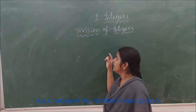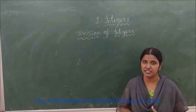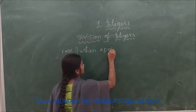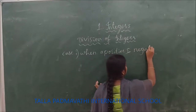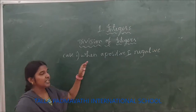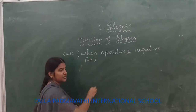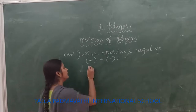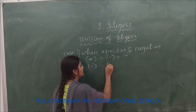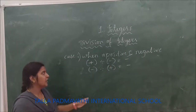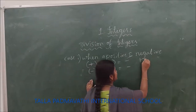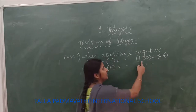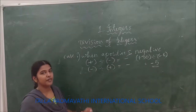Now let us see the division of integers. As with multiplication, we have three cases. Case 1: when a positive integer and a negative integer are divided. If you divide a positive integer by a negative integer, you get a negative integer. Or if you divide a negative integer by a positive integer, you also get a negative integer. For example, plus 30 divided by minus 6 — positive divided by negative gives a negative answer, so 30 divided by 6 is 5, giving minus 5.